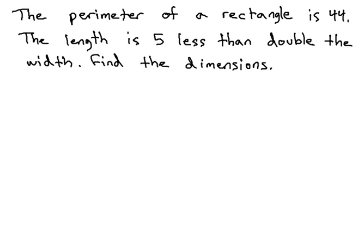In this video, we're going to find the sides of a rectangle given information about the perimeter. We're told the perimeter of a rectangle is 44 and that the length is 5 less than double the width.